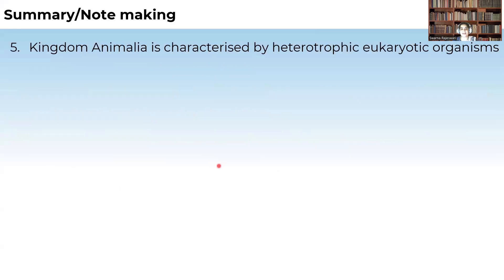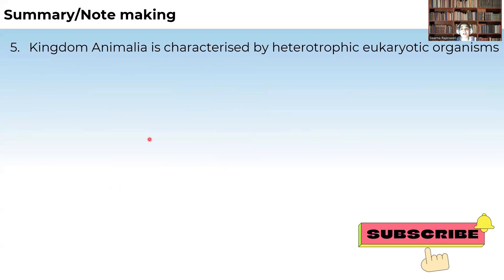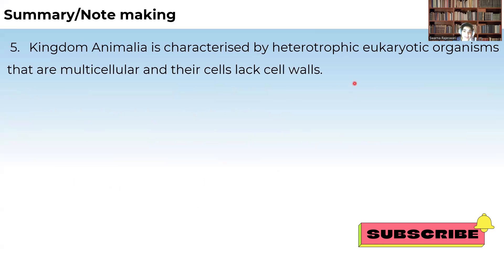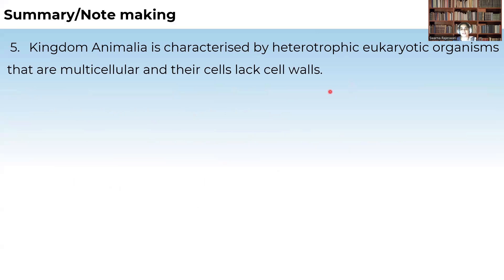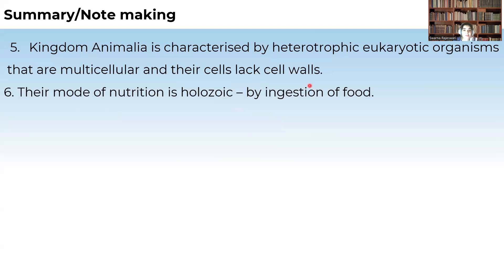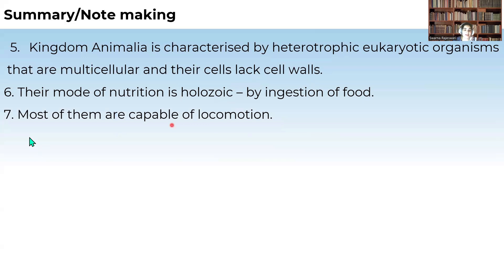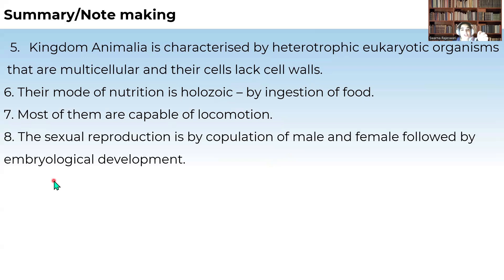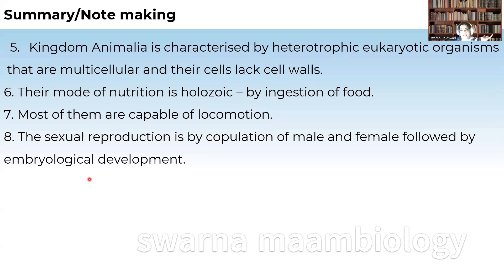Coming to the animal kingdom, Kingdom Animalia includes eukaryotic heterotrophs that are multicellular but do not contain any cell walls. Absence of cell wall is a characteristic of the animal cell. The mode of nutrition in animals is holozoic — through ingestion of food. Most animals are capable of locomotion, whereas plants are sessile. Sexual reproduction occurs by fusion of male and female gametes, and the developmental stages are the same as the parent.